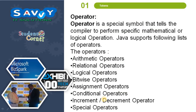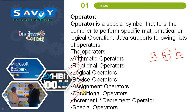The next token type is operators. An operator is a special symbol that tells the compiler to perform a specific mathematical or logical operation between operands. For example, in a + b, a and b are operands and + is the operator performing addition. Java supports eight categories of operators: arithmetic, relational, logical, bitwise, assignment, conditional, increment/decrement, and special operators.